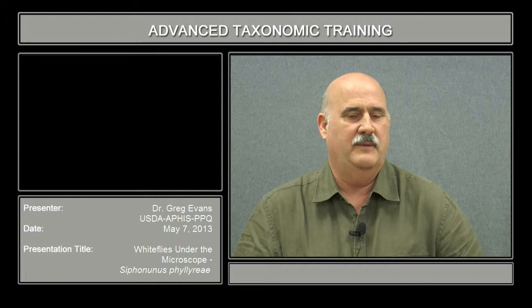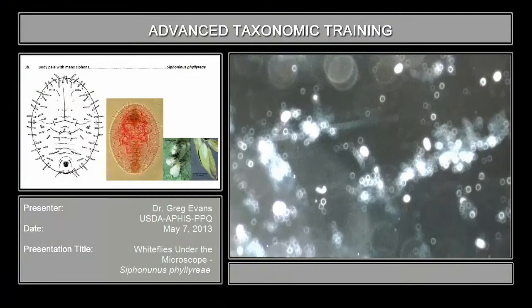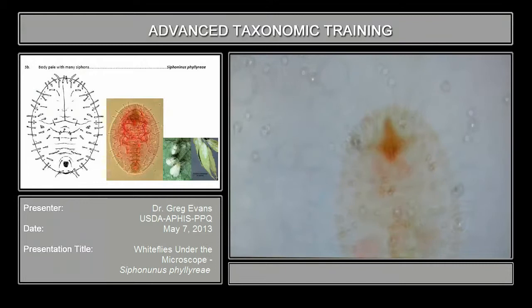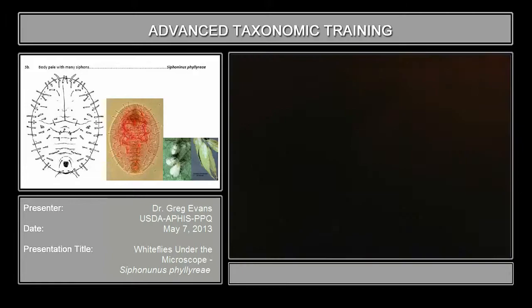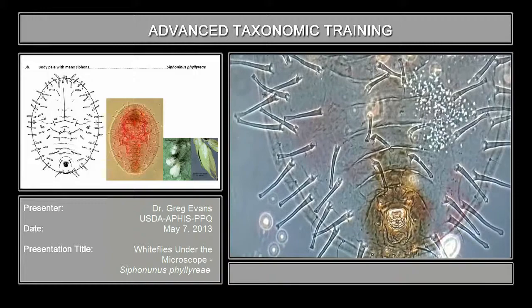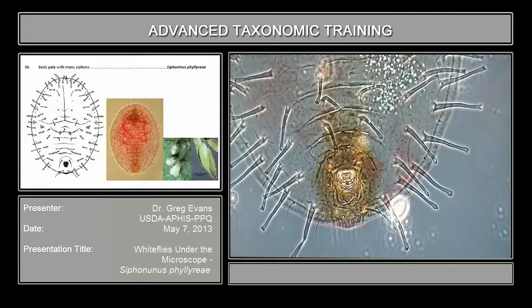We'll go to the Siphoninus phyllorea specimen next. This is the ash whitefly, and you can see that it has these very elongate siphons. It's pale in color, and it too has this very unusual character that's only found to this degree in Siphoninus. There are some other genera that have a few siphons, but nothing like this.